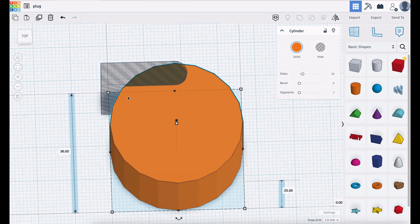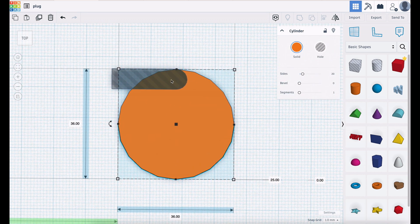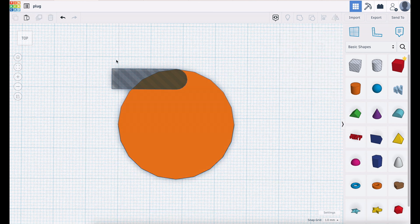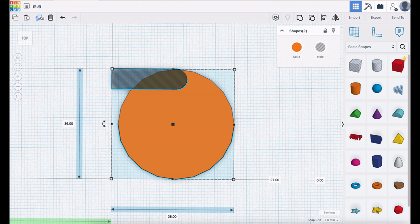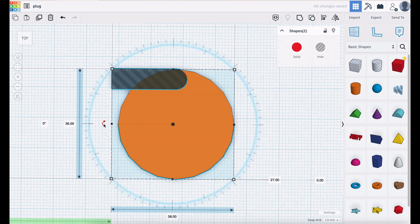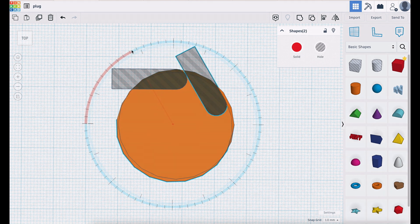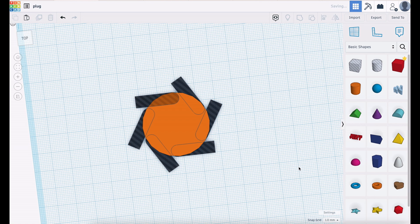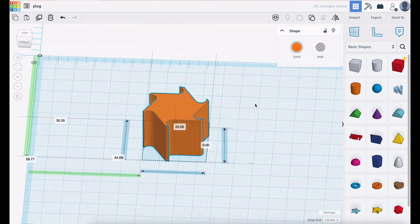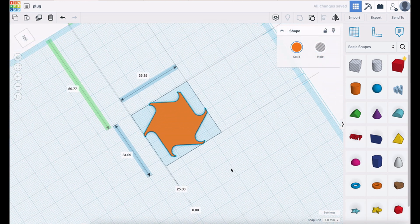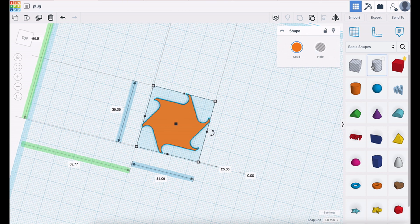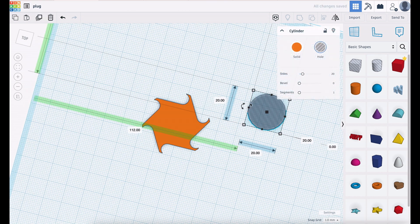Now we want to repeat that cut out all the way around at 60 degree increments. And rotate it 60 degrees. When you've done that you get that. Highlight the whole lot and group them. And there you go. You get your funky design.